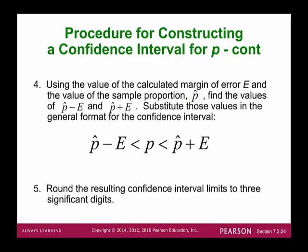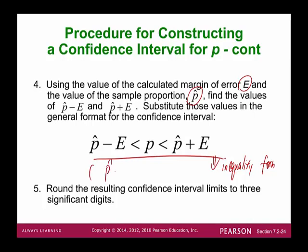Step 3 — evaluate the margin of error using the formula: critical z-score times the square root of p-hat times q-hat over sample size. Step 4 — once we know the margin of error and sample proportion, construct the confidence interval in interval notation or inequality form as p-hat minus E to p-hat plus E. Round the result to three significant digits.